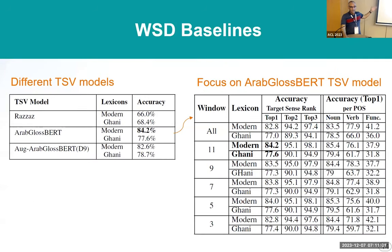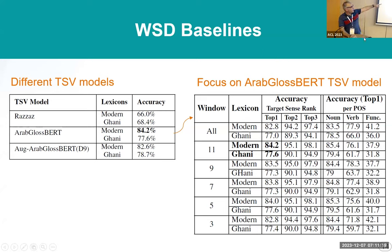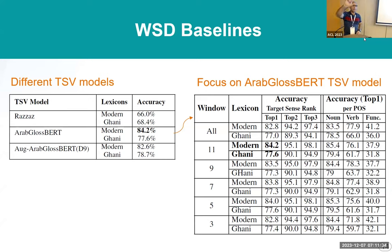We used three TSV models in the system. The last two were developed by us, and the first one was developed by somebody called Razaz. With the modern sense inventory, we get 84.2 percent — this is really high. Just to let you know that in English there is 80% with WSD. And we are talking about full Arabic, not only a small set of senses — we are talking about 60-something definitions.